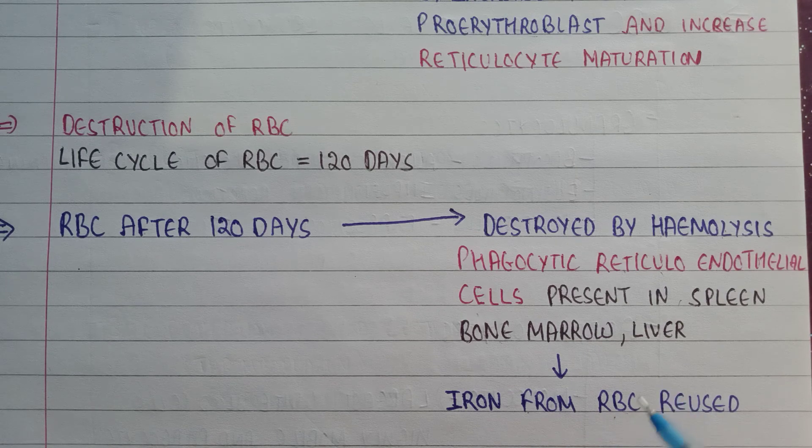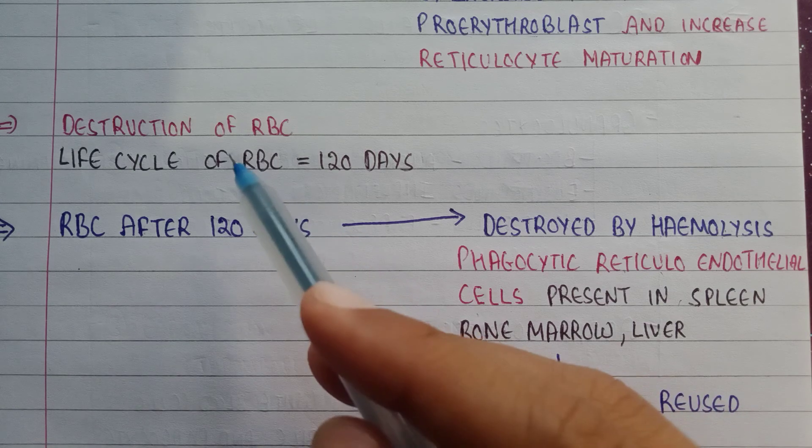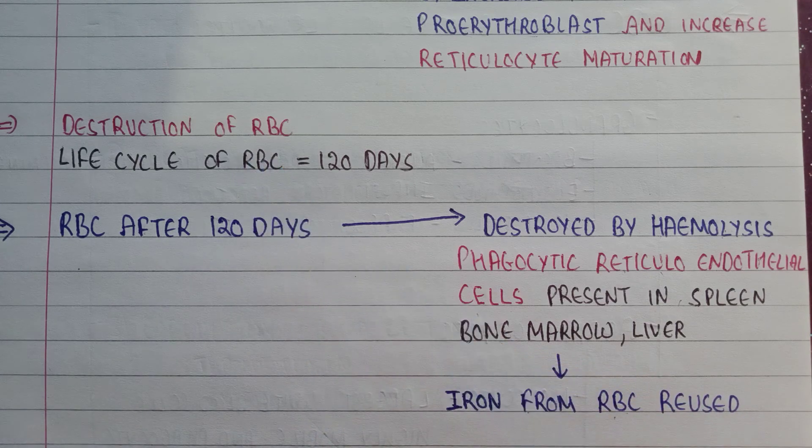The iron from the RBC is reused to make up the hemoglobin molecule. So this is all about the destruction of RBC.